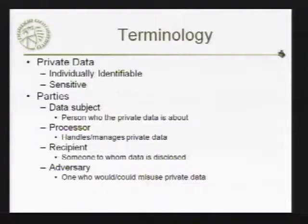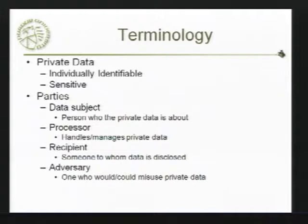Parties involved: people talk about the data subject — that's who the data is about. With most privacy issues, unfortunately, the person who the data is about is not who actually controls the data. So there is a processor that is handling the data, a recipient of the data that this data is disclosed to, and an adversary who would misuse the data. The recipient of the data may in fact be a potential adversary who would use the data in ways that you as the subject would prefer they don't. The goal of technologies to preserve privacy is to try to prevent that disclosure at a level where the data can be misused.